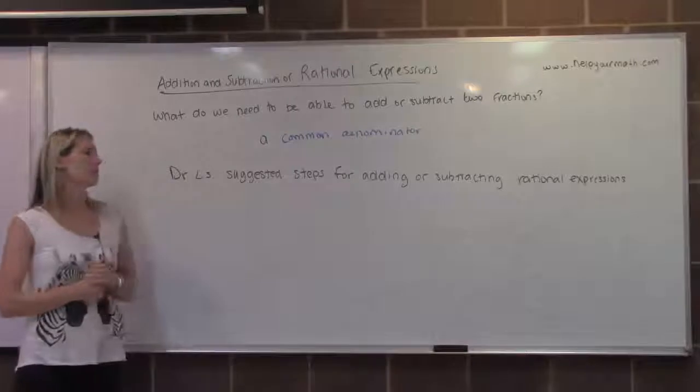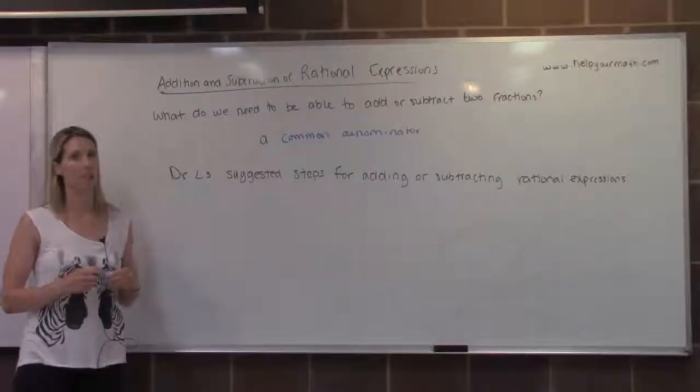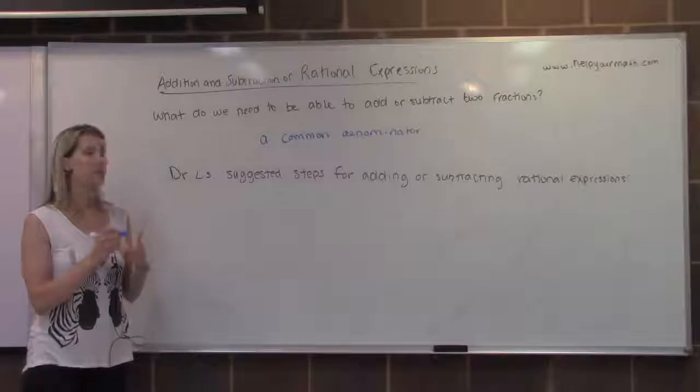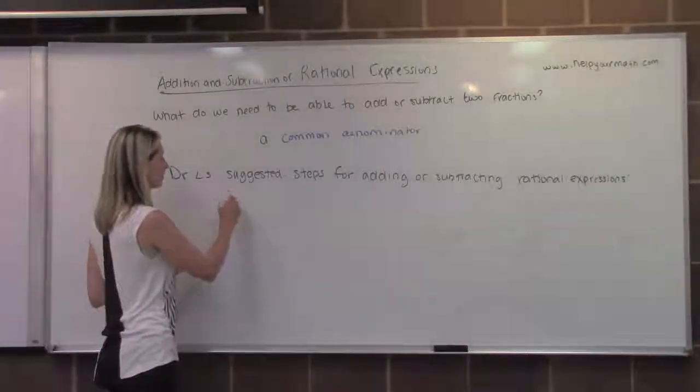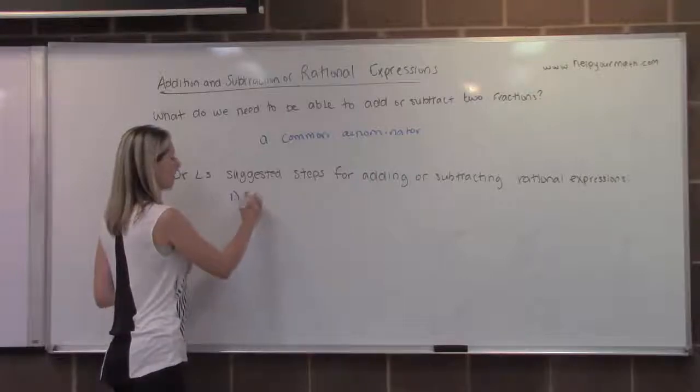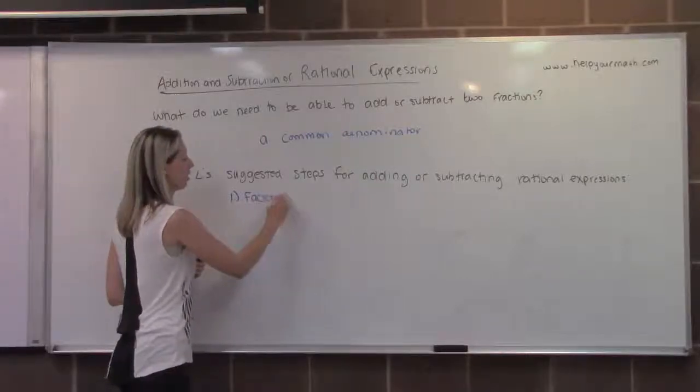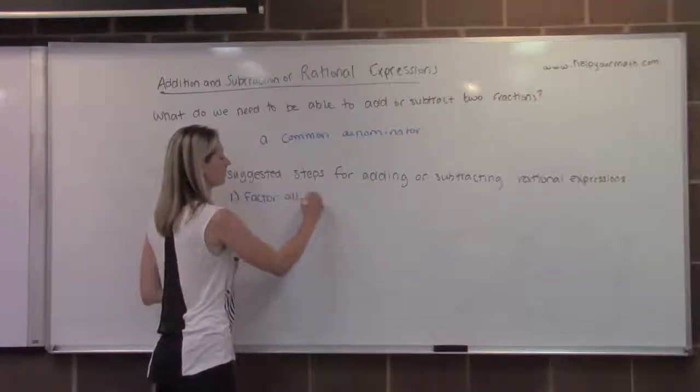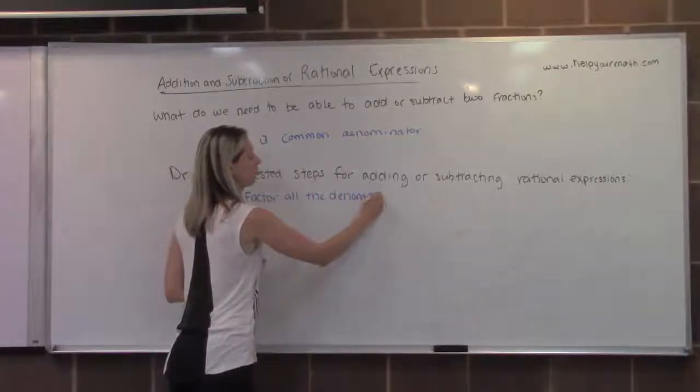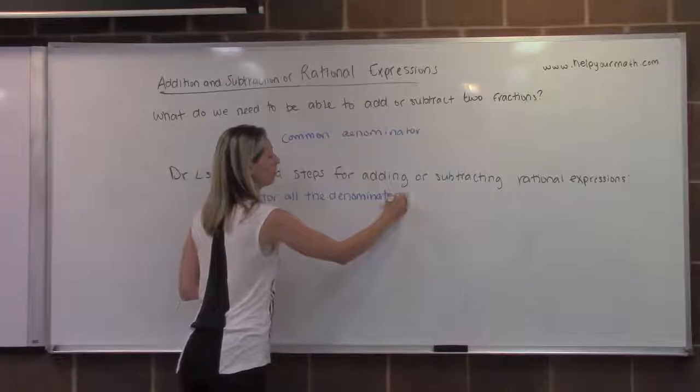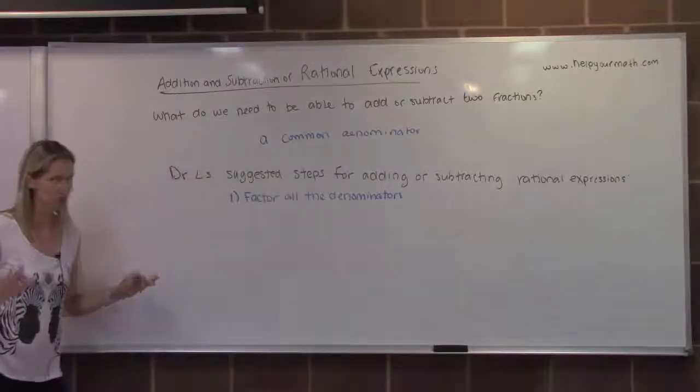So I do have suggested steps for adding and subtracting rational expressions. First of all, what we want to do is we want to factor the denominators. So first, factor all the denominators. We do not want to factor the numerators. Please don't factor those. Leave the numerators alone. Don't touch the numerators yet.